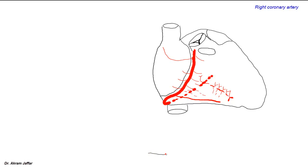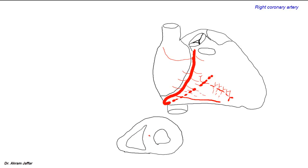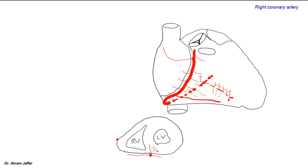In a cross-section of the heart through the right and left ventricles, the left ventricle is almost circular, while the right ventricle is crescentic in shape with a thinner wall. The interventricular septum has the thickness of the left ventricle. The marginal branch of the right coronary artery and the posterior interventricular artery can be identified on this section. The posterior interventricular artery supplies ventricular branches to both ventricles and short septal branches that supply only one-third of the interventricular septum.